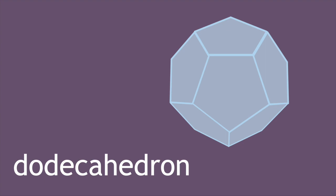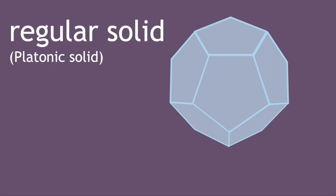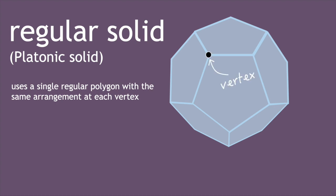Now as we had regular and semi-regular tessellations, we can also have regular and semi-regular solids. A regular solid requires a single regular polygon to be used, with the same arrangement at every vertex. These are also given a special name, the platonic solids.